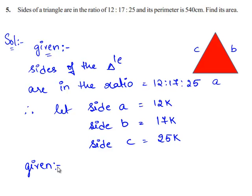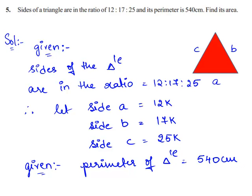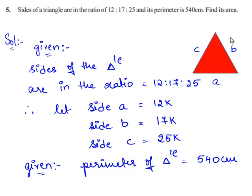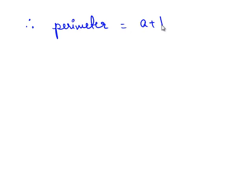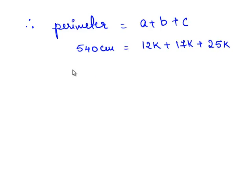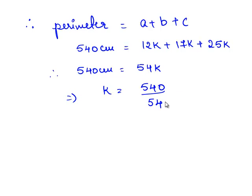Also given in the question, the perimeter of the triangle is equal to 540 cm. The perimeter of a triangle is the sum of the lengths of all three sides. Therefore, perimeter is equal to A plus B plus C. So in the given question, 540 cm is equal to 12K plus 17K plus 25K, which gives 540 cm equal to 54K. This implies K is equal to 540 divided by 54, which is equal to 10.